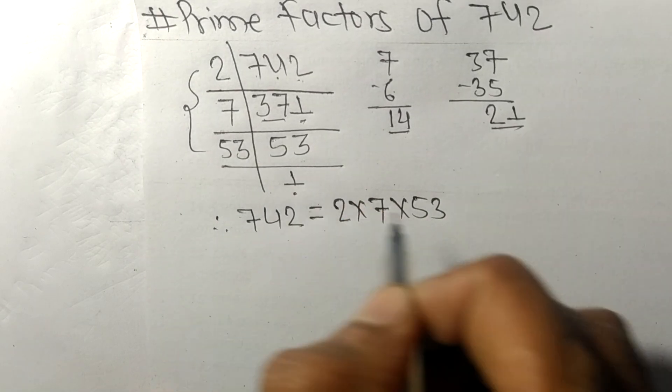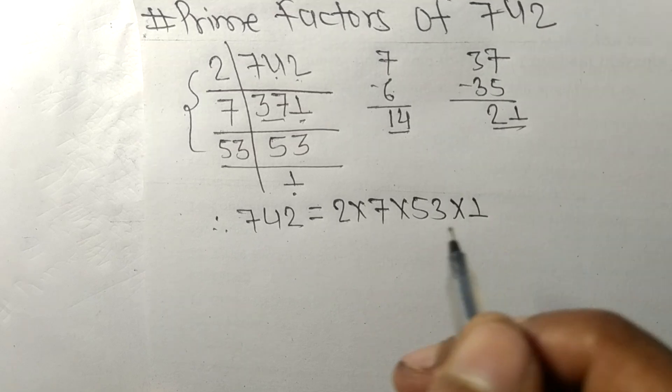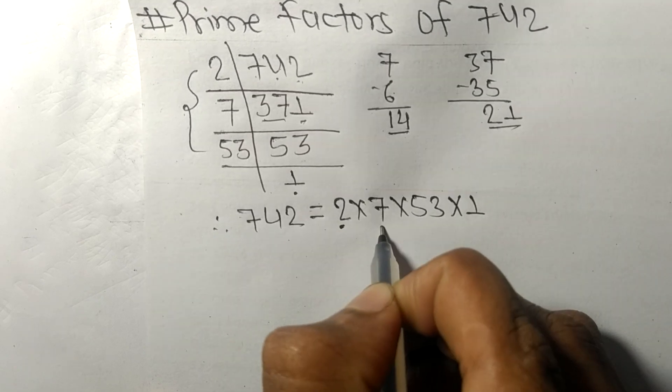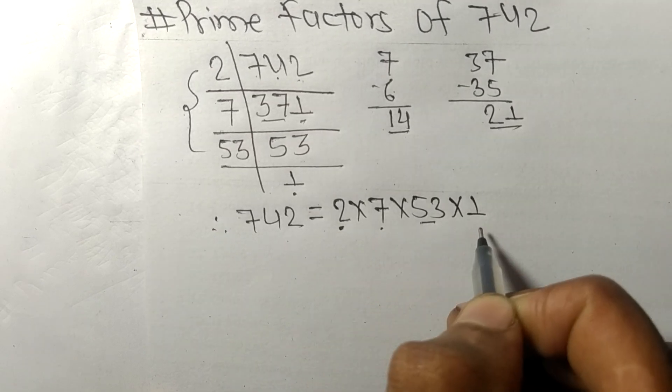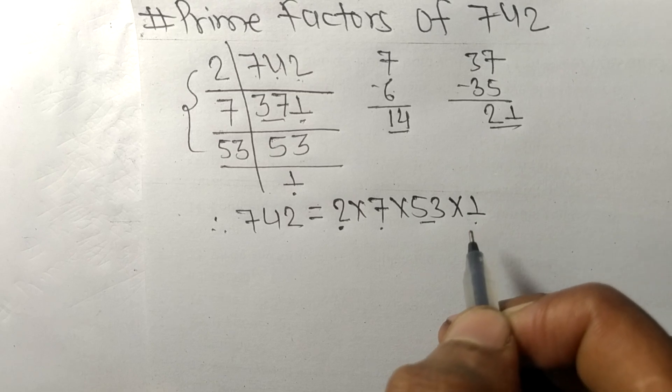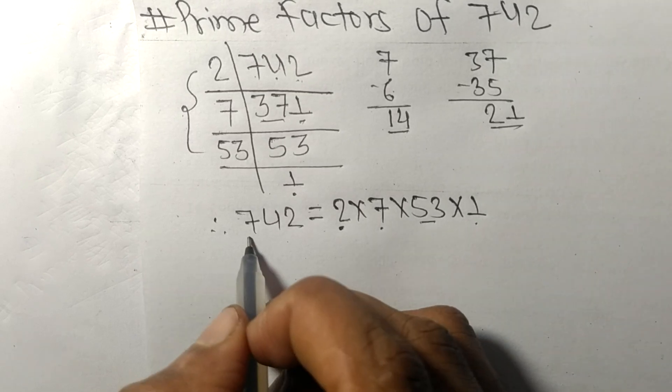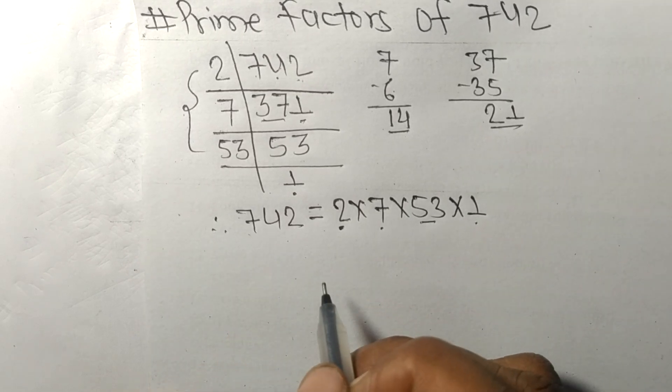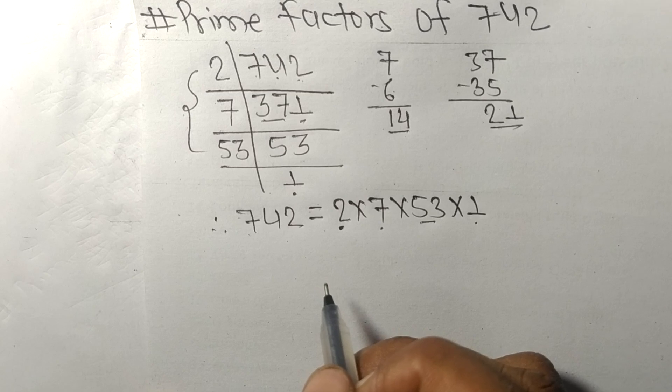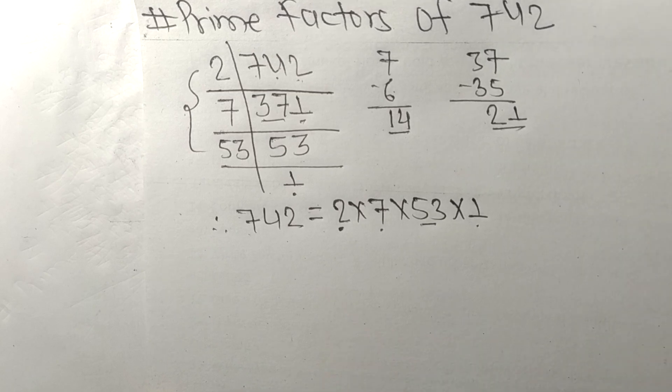So 2, 7, 53, and 1 are the prime factors of 742. That's it for today, thanks for watching.